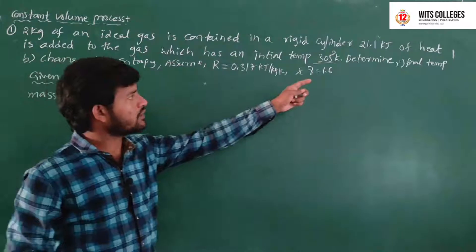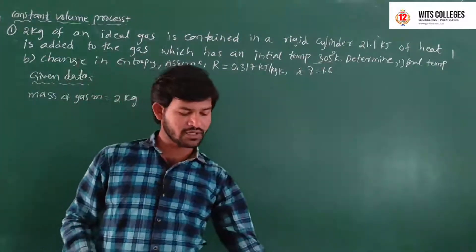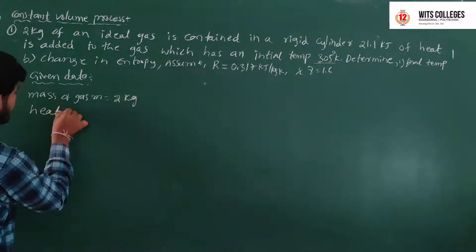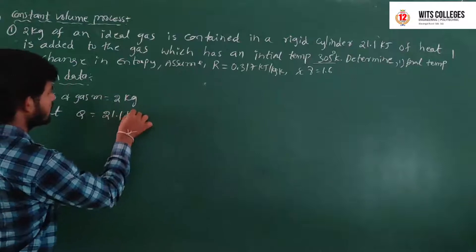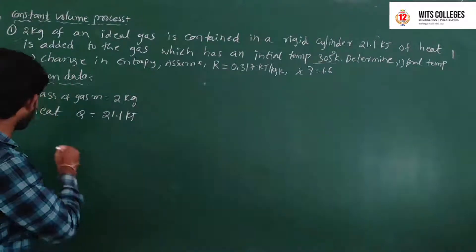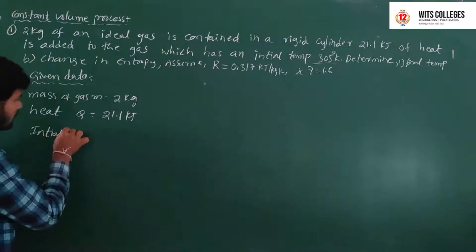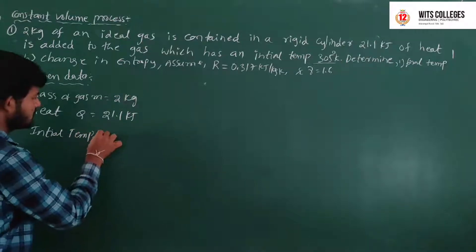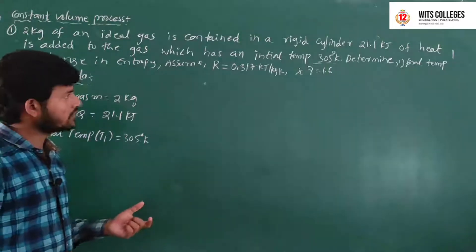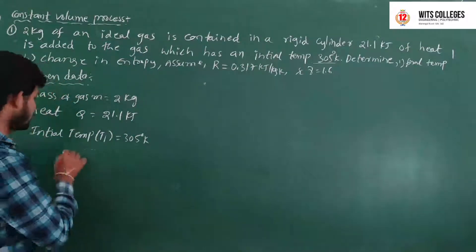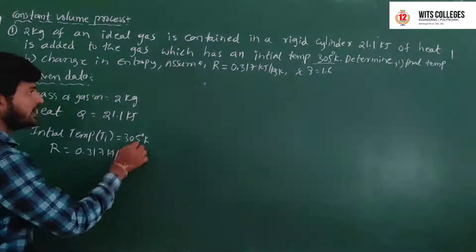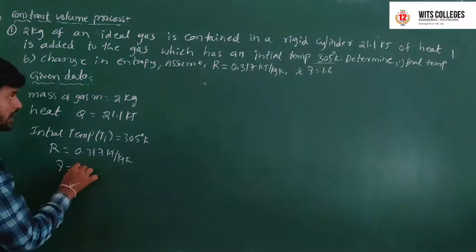Heat Q equals 21.1 kJ of heat is added to the system. Initial temperature T1 equals 305 degrees Kelvin. R equals 0.317 kJ per kg·Kelvin. Gamma equals 1.6.